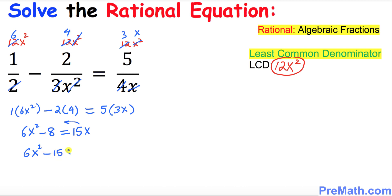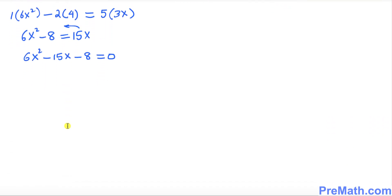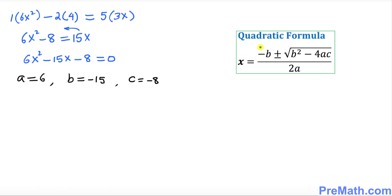So this simply becomes 6x square. When you move this positive 15x, this become negative 15x, and we already got negative 8 over here equal to 0. So as you can see, this is a quadratic equation and we want to solve for this one for x.